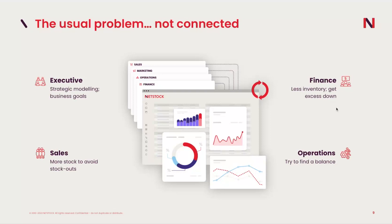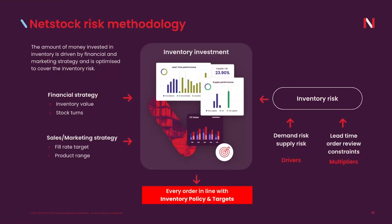If you ask finance what they're doing this year, it's increasing profitability, increasing the turn of items, and keeping costs low. Sales will give you a revenue number. These people just don't have a common platform to communicate — they're using the same inventory to achieve individual goals but lack the ability to communicate on a shared platform.